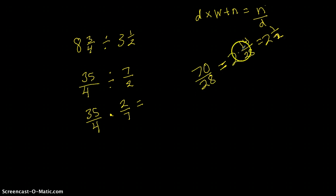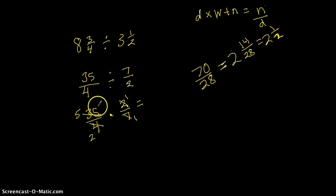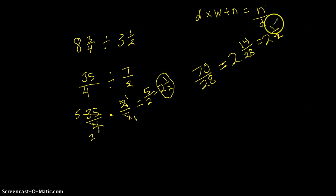That's quite a few steps. If I cross-simplify, I make it a lot easier. In this situation, two and four will cross-simplify — two is the greatest common factor, so two goes into itself once and into four twice. Seven goes into itself once and into thirty-five five times. So I have five times one equals five over two times one equals two, which gives me two and one-half — the same answer. I did get confused for a moment with the fourteen and twenty-eight, so I highly recommend cross-simplifying.